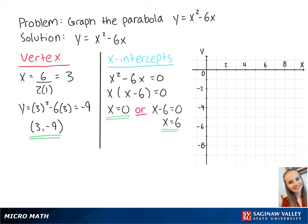Now that we have our x-intercepts x equals 0 and x equals 6, we can graph the points of the parabola. The vertex is at 3, negative 9, and the intercepts are at 0, 0, and 6, 0.